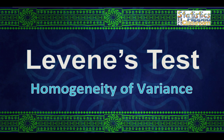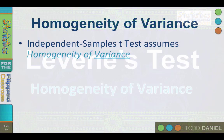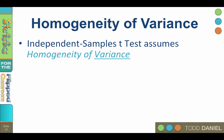Levine's test for equality of variances is a test of whether the variances of two samples or groups are approximately equal or homogenous. The independent samples t-test assumes that the variances of the sample groups are approximately equal, or that the samples have homogeneity of variance.